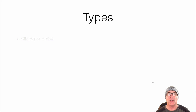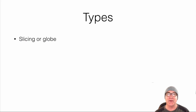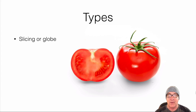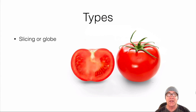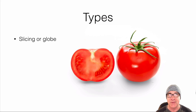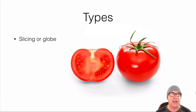One of the first ones I want to talk about is slicing and globe tomatoes. They tend to be more rounded, obviously kind of reddish. These are the ones that a lot of us will buy at the grocery store, and they're also used in the food industry.